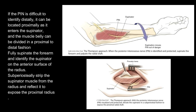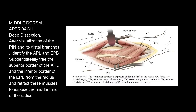Fully supinate the forearm and identify the supinator on the anterior surface of the radius. Sub-periosteally strip the supinator muscle from the radius and reflect it to expose the proximal radius. Middle dorsal approach, deep dissection: after visualization of the PIN and its distal branches.